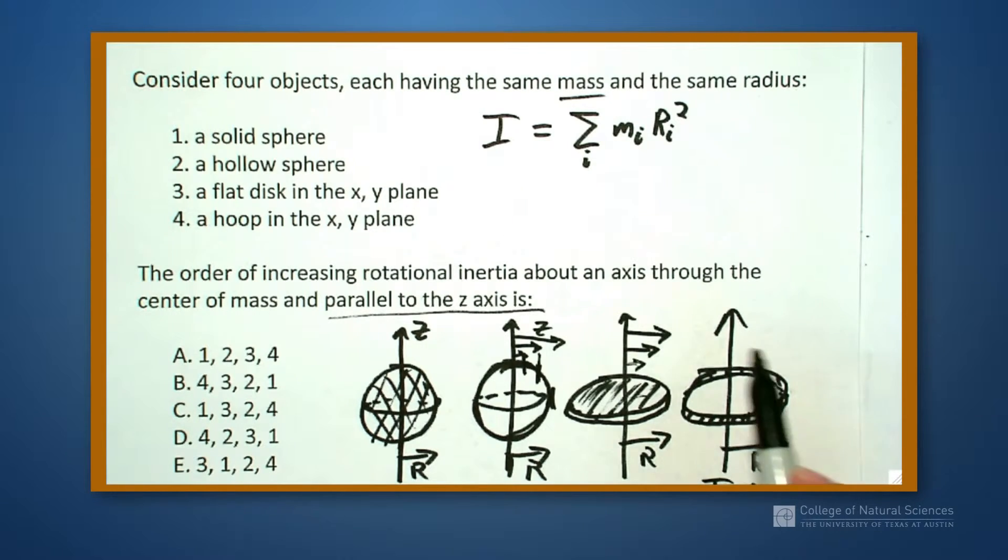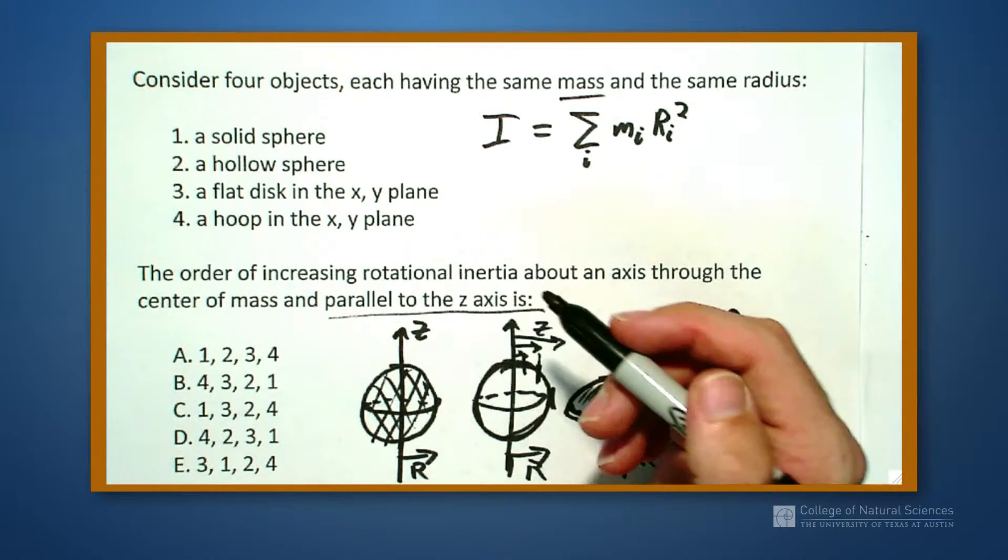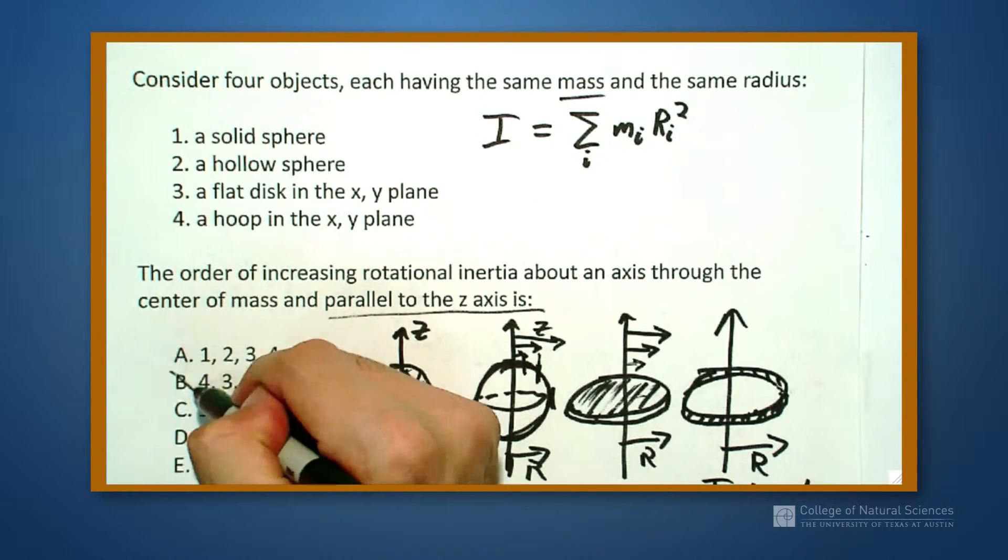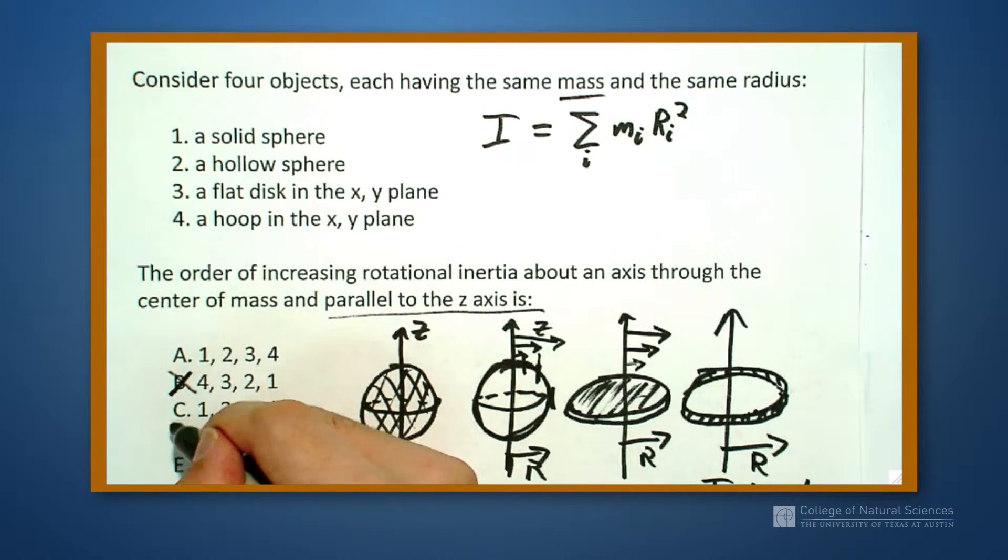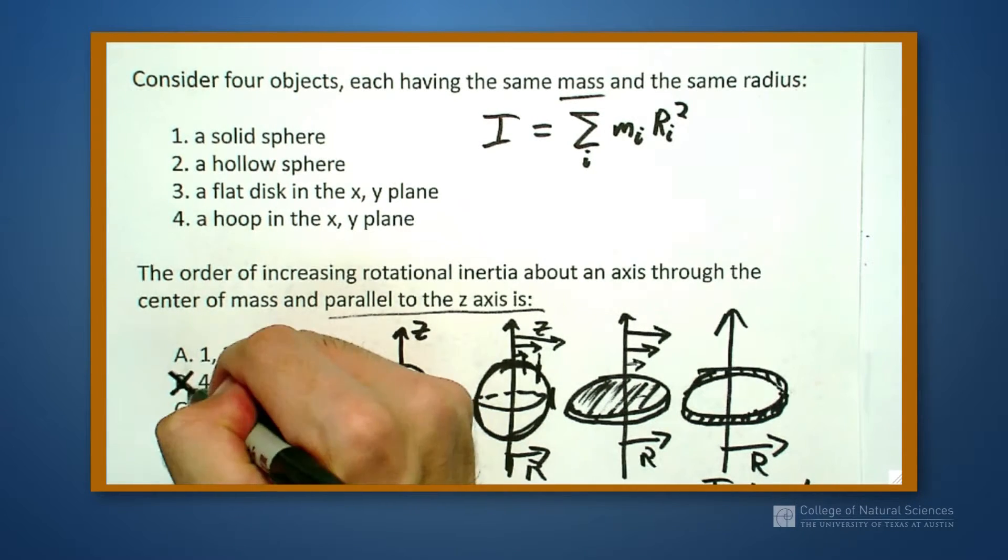So I know that the hoop is going to be the largest. So my case is where one is at the end, I need four at the end, so I can eliminate two of my choices.